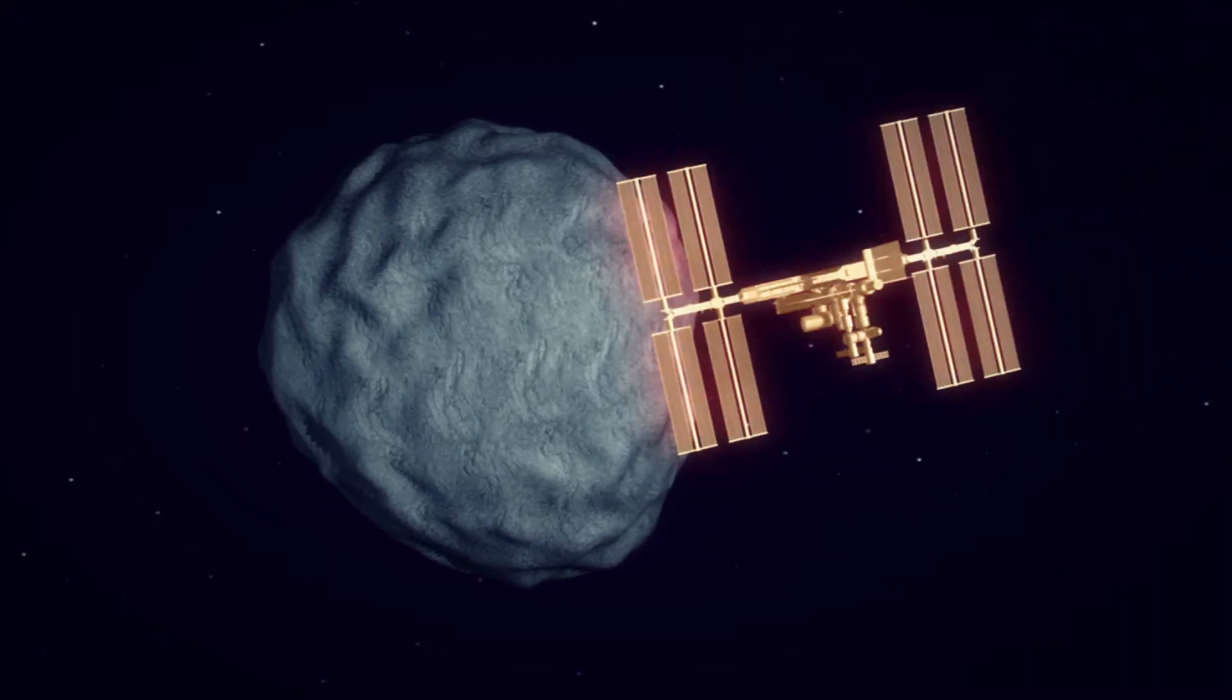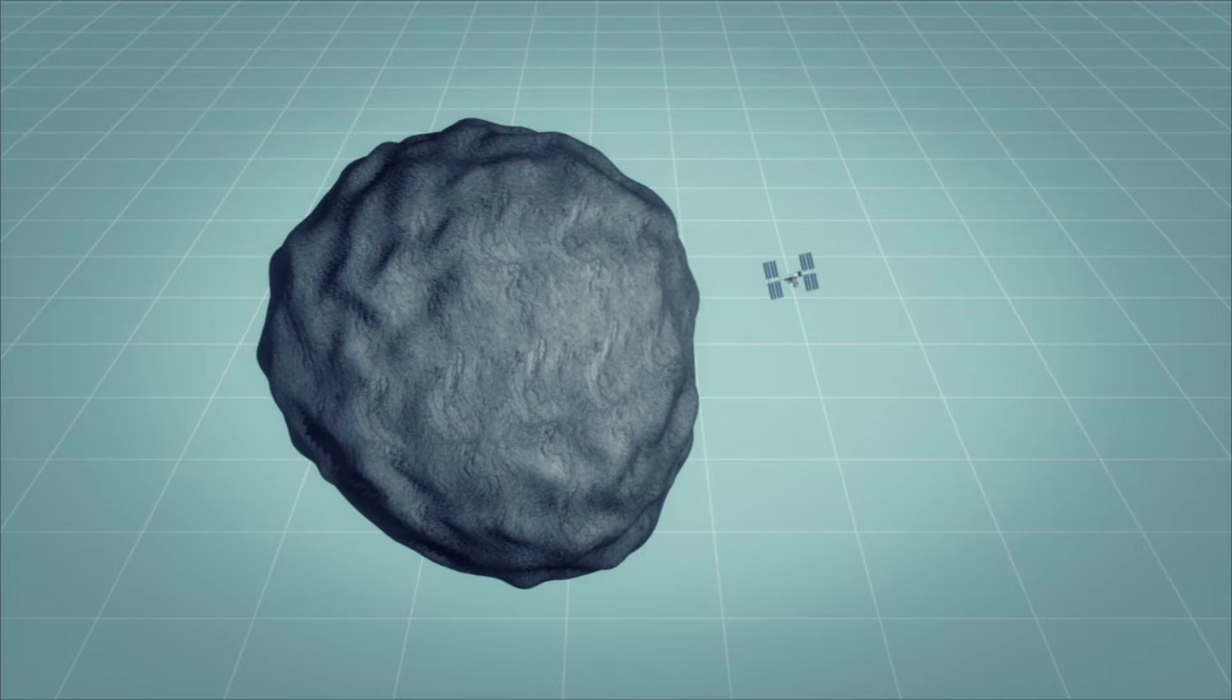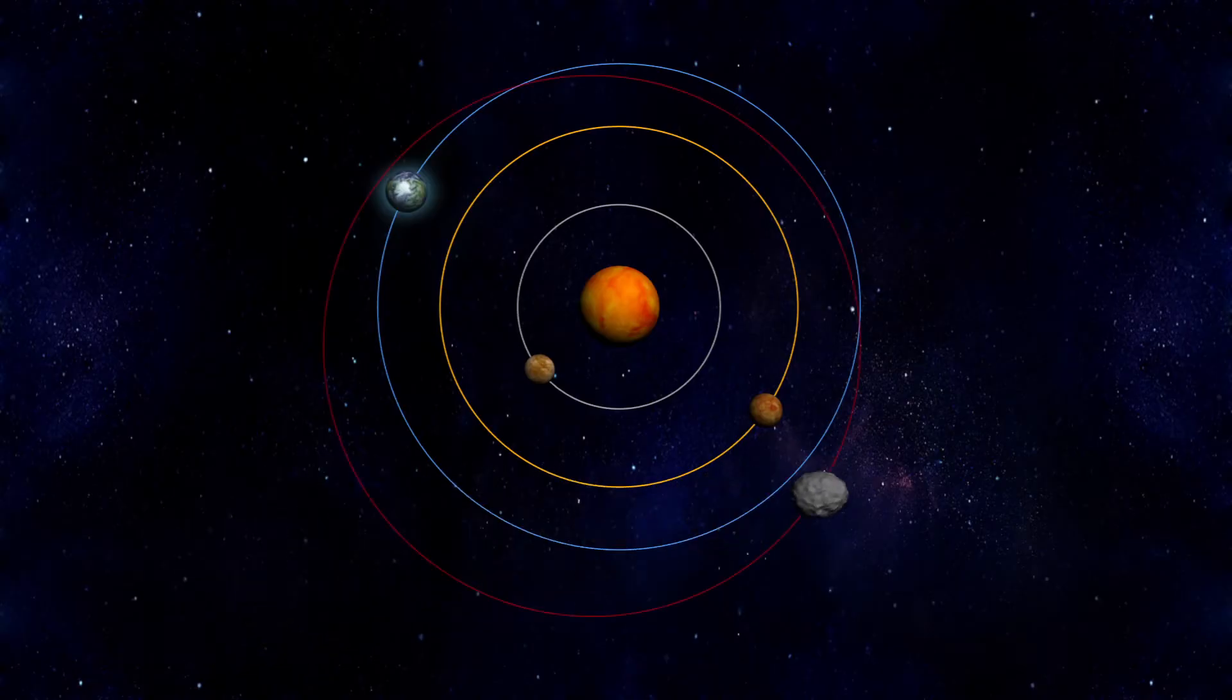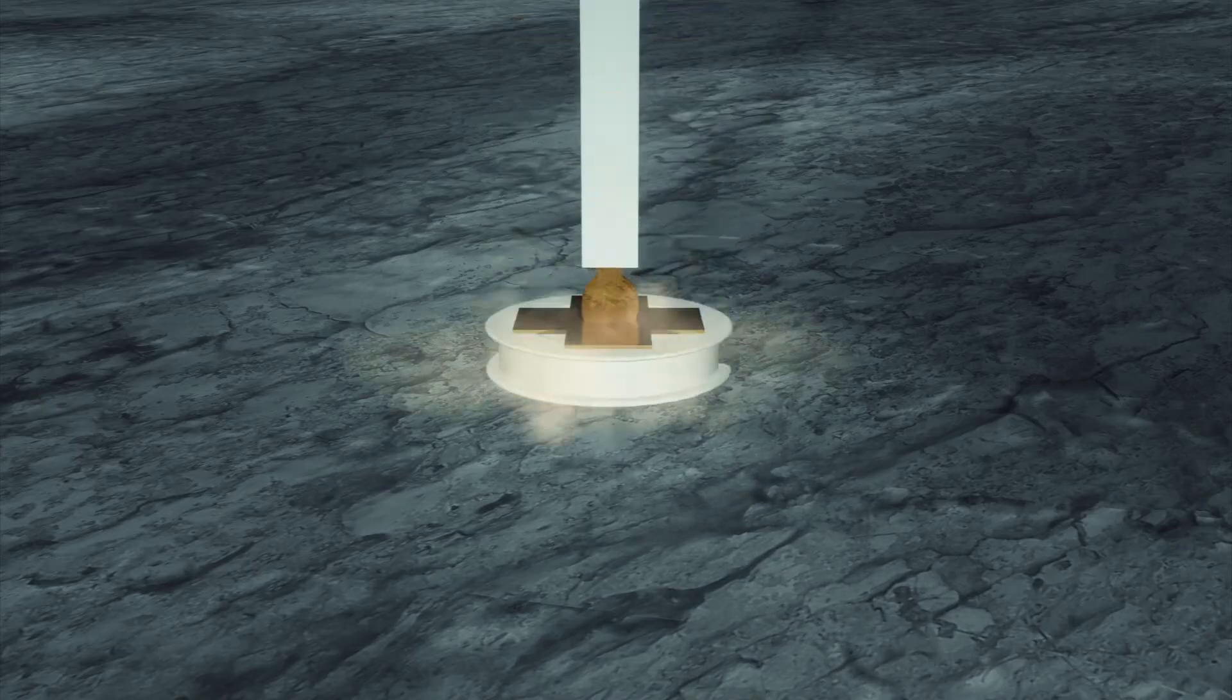It will intercept the 560-meter diameter asteroid 1999 RQ-36, shown here next to the International Space Station, two years later. There, the probe will spend up to 500 days mapping the asteroid's surface and taking samples.